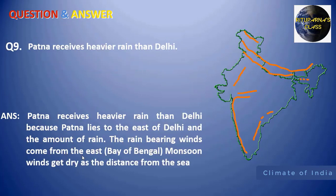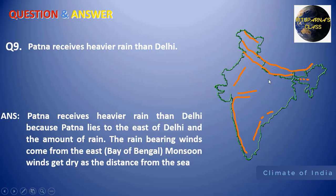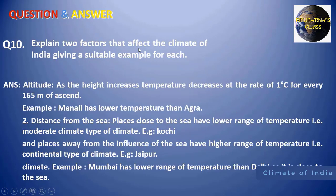Next: Patna receives heavier rain than Delhi. Bihar and Delhi both receive rainfall from the Bay of Bengal branch. When the Bay of Bengal branch comes from the east, it first reaches Patna and then Delhi. The rain-bearing monsoon winds get dry as the distance from the sea increases. Since Delhi is farther from the sea than Patna, Patna receives heavier rain than Delhi.